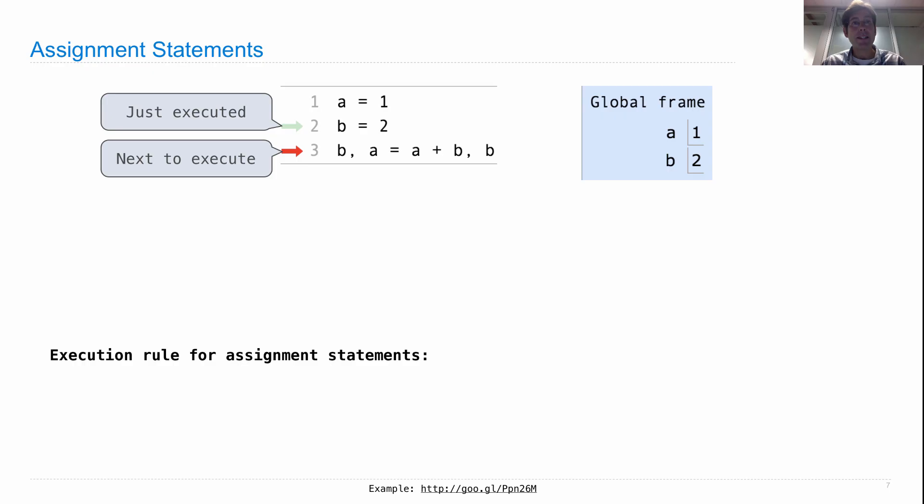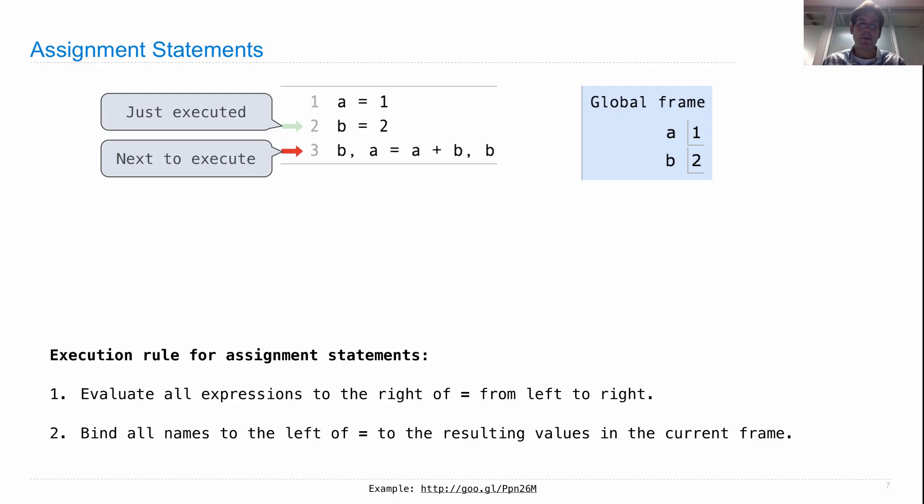Now there is an execution rule for assignment statements that you need to understand because Python always does the same thing over and over again. And here's what it does for assignment statements. It evaluates all of the expressions to the right of equals from left to right. Then, after evaluating all those expressions, it binds all the names to the left of equals to the resulting values.